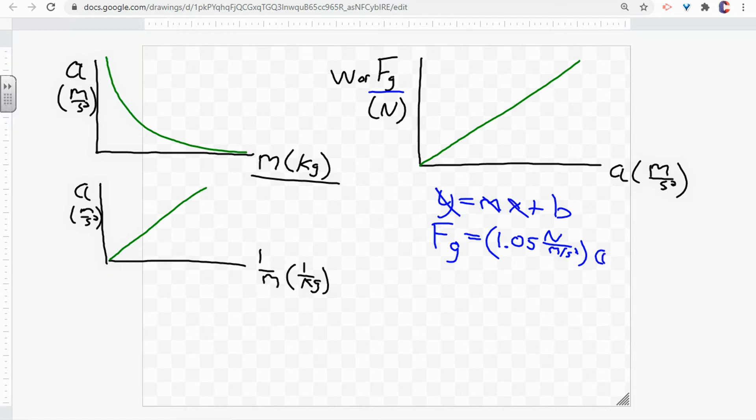And that unit is going to be newtons over meters per second squared for now. X becomes acceleration. And the Y-intercept is pretty much zero, because if you don't have a weight hanging off the end, there's not going to be an acceleration.